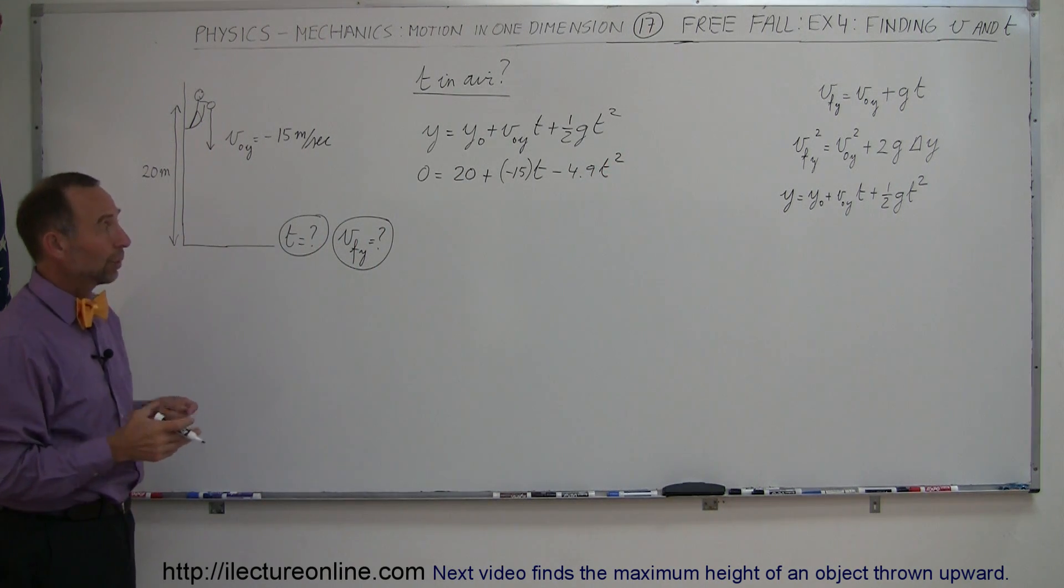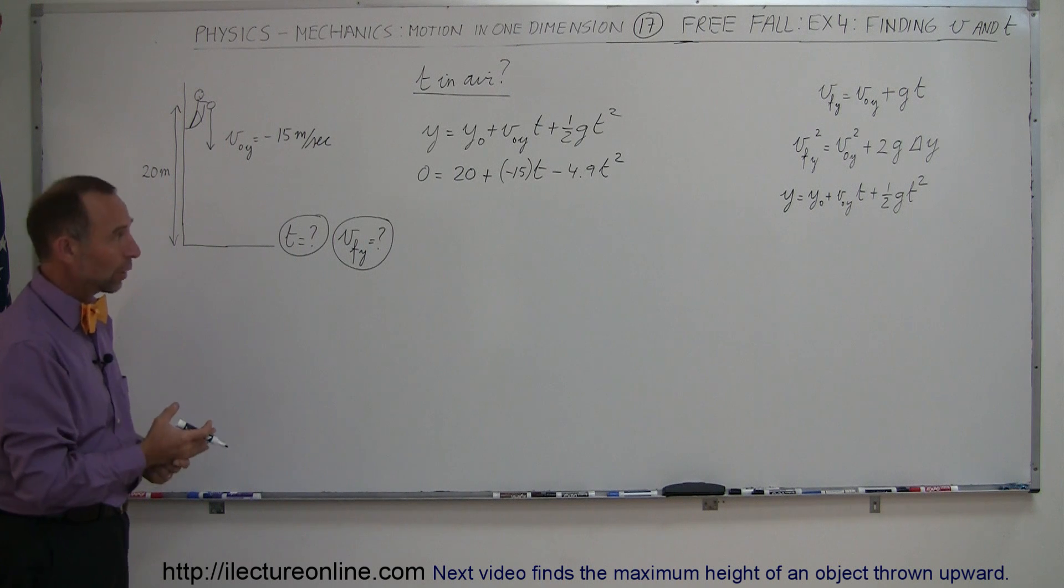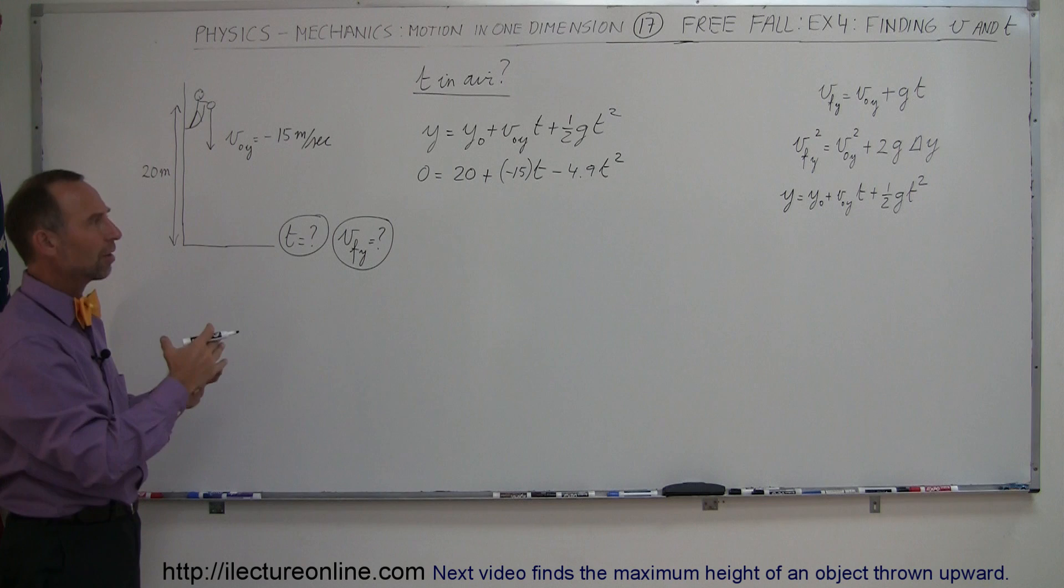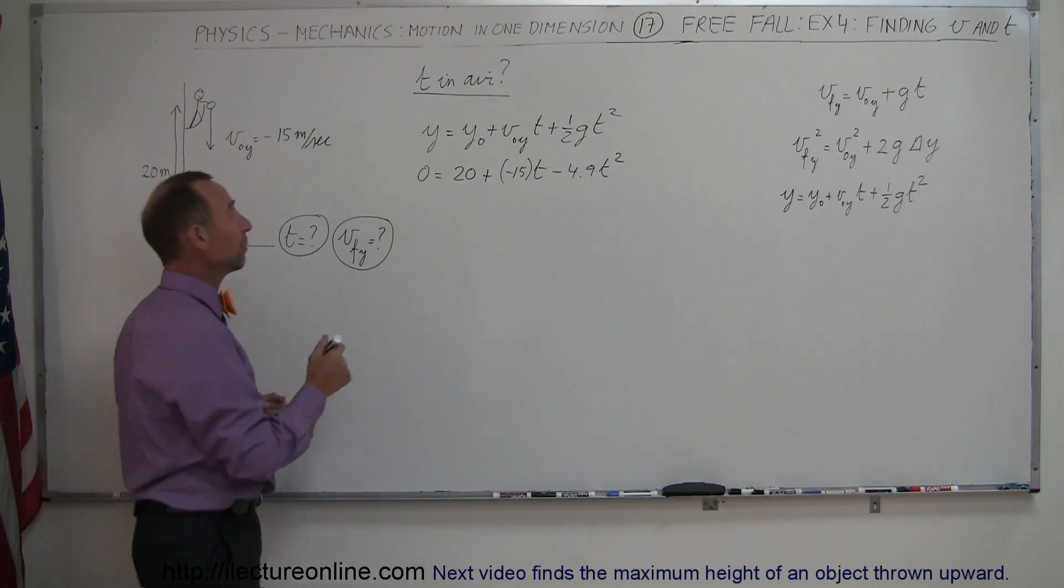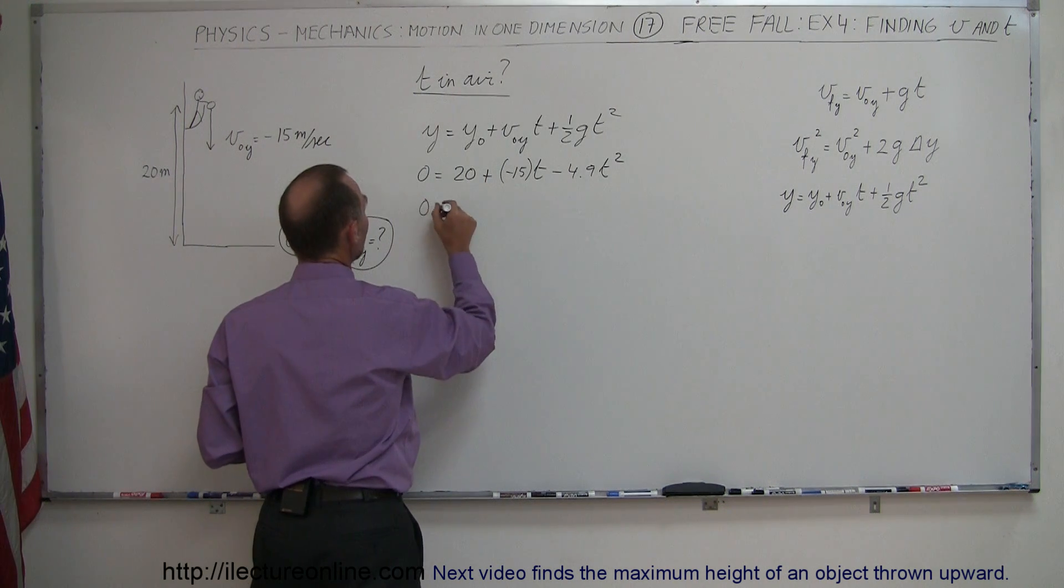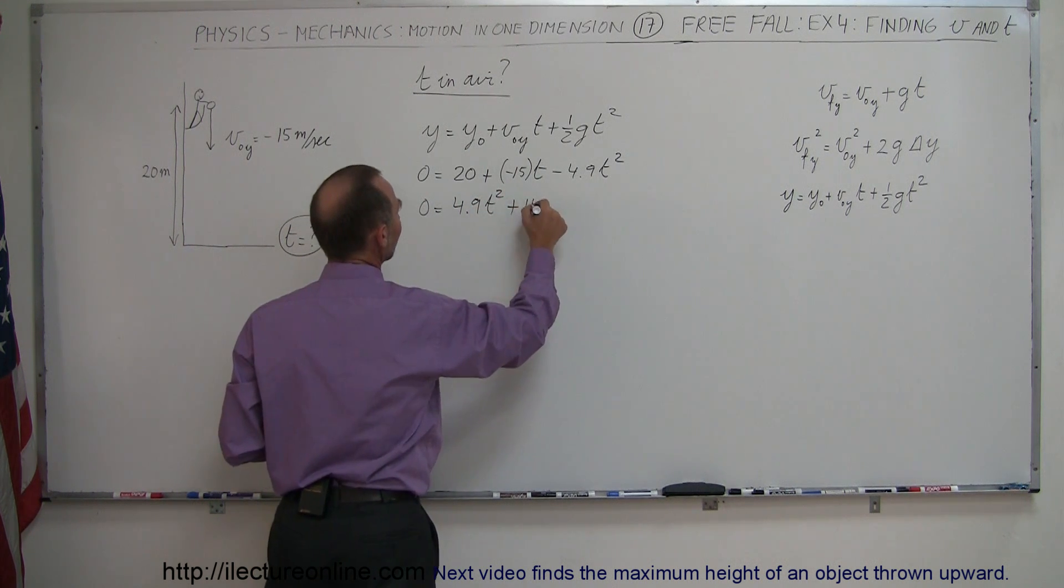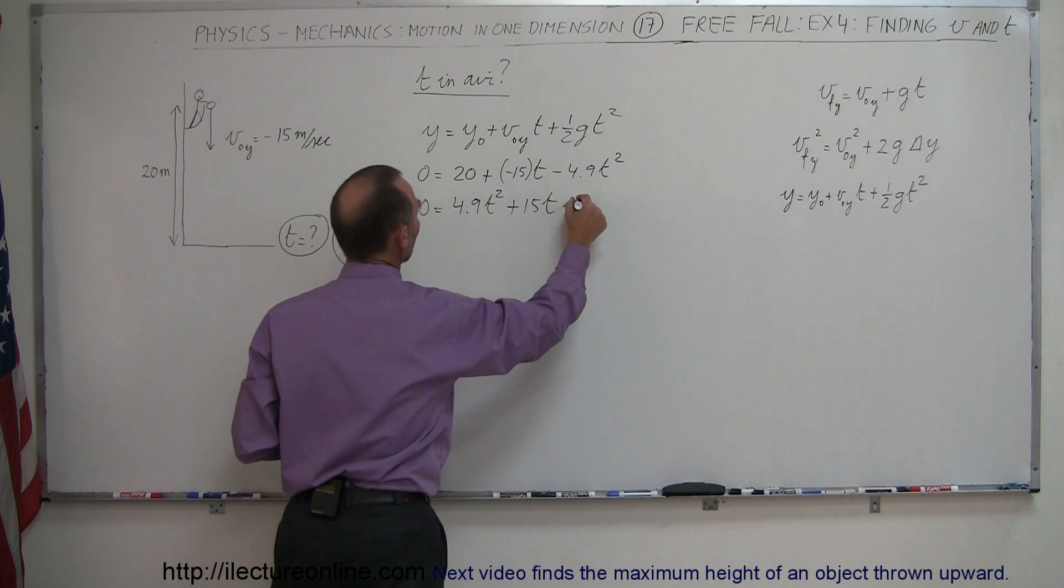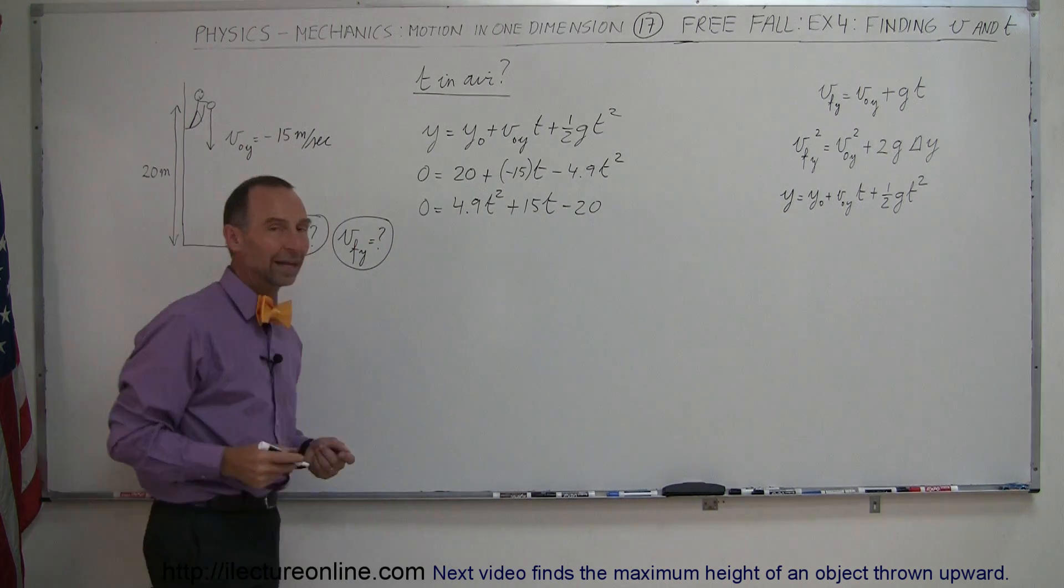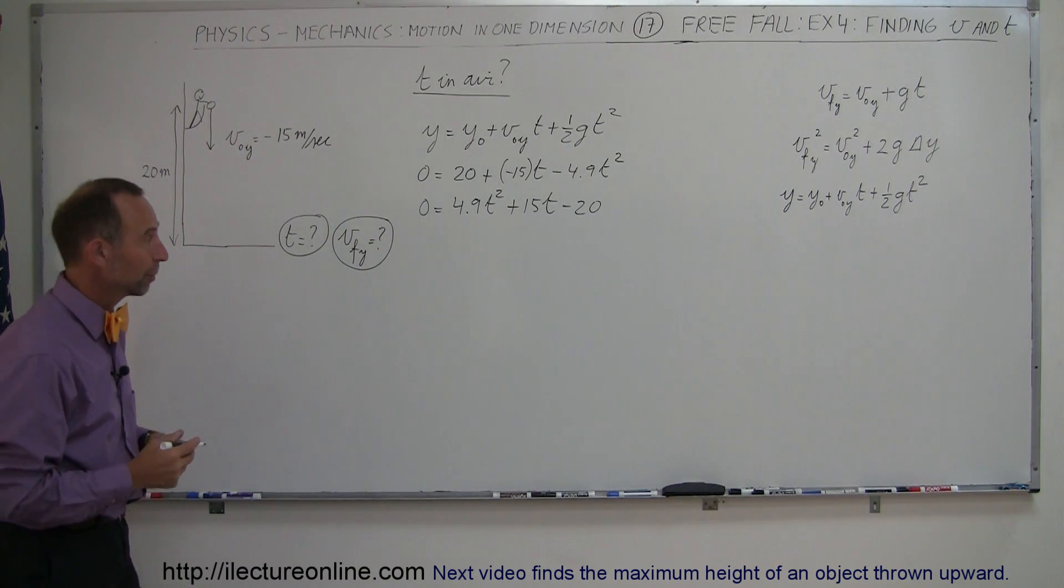Now next, we realize that this is of course a quadratic equation. We want to have the square term first, we want that to be positive, so we're going to multiply both sides of the equation by negative 1, so this becomes 0 equals a positive 4.9 t squared. This will become positive, plus 15 t, and this will then become a minus 20. Now we can go ahead and plug that into our quadratic formula.